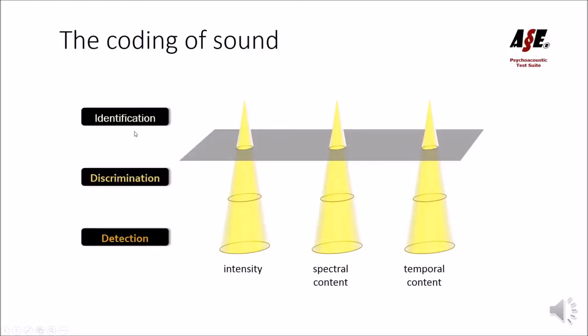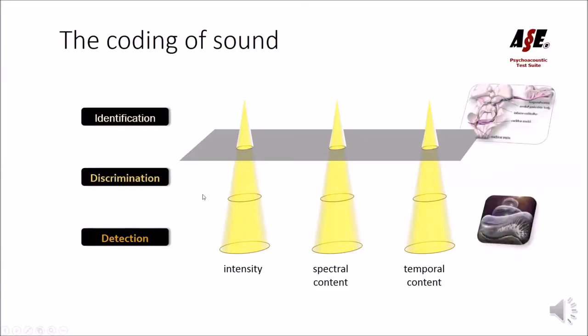I like to make this distinction because detection and discrimination really relate to the core function of the sensory organ itself, the cochlea, whereas identification does not. Identification requires good cochlear functioning, plus good central processing of sound, cognition, etc.